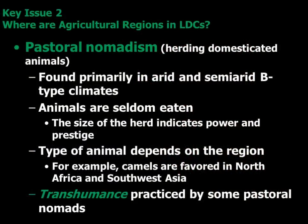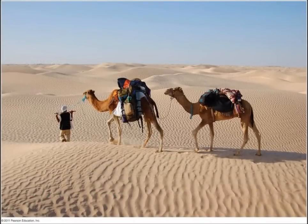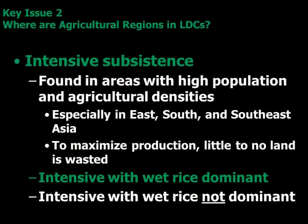Then we looked at shifting cultivation. Where would you find it? What climate? What region? That would be in a humid or low-latitude climate where they tend to have high temperatures and abundant rainfall — that's why we can have floods and monsoons for that kind of agriculture.